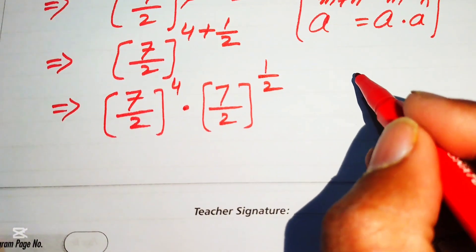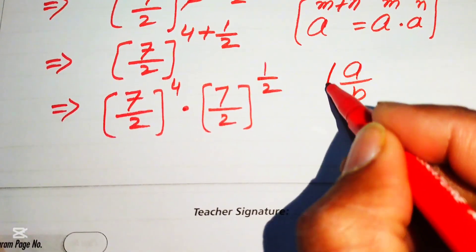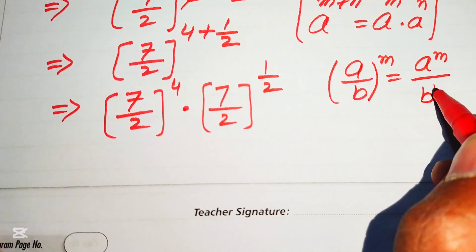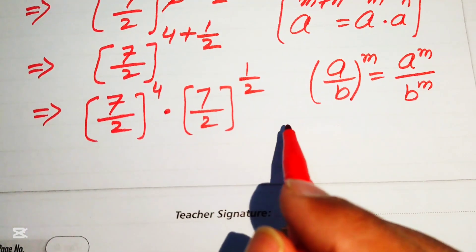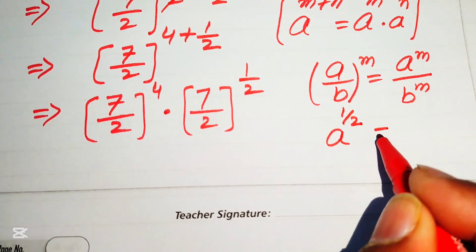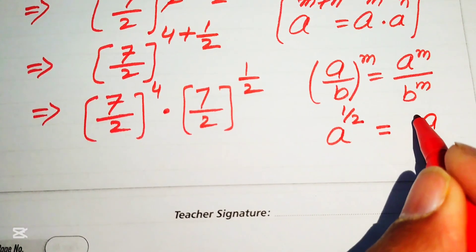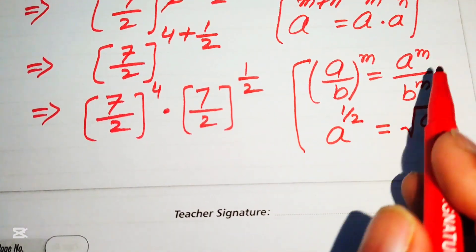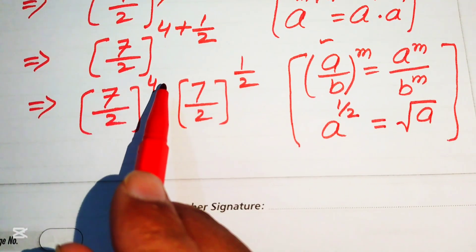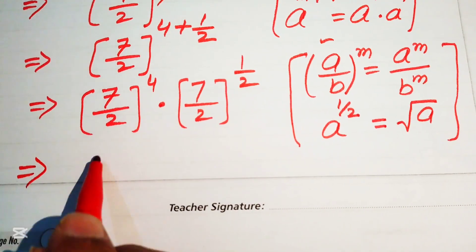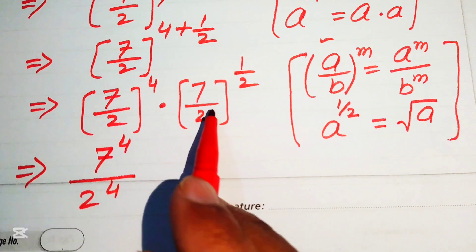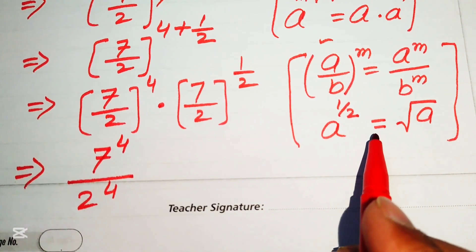We apply the law (a over b)^m = a^m / b^m, and also the exponent-to-radical conversion: a to the power of 1 over 2 equals the square root of a. Applying these two rules, we separate the exponent on both terms, writing 7^4 divided by 2^4, multiplied by the square root of (7 over 2).